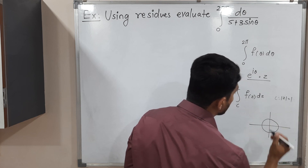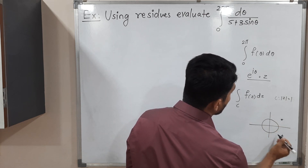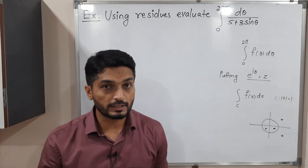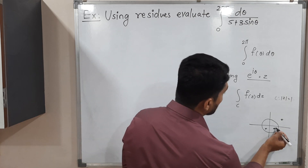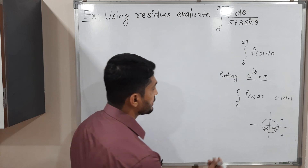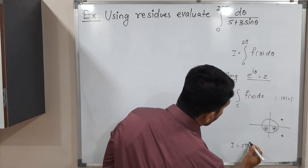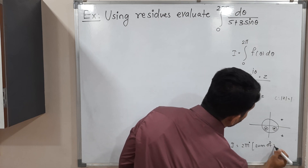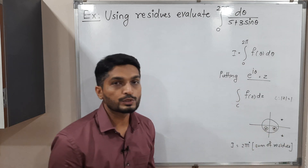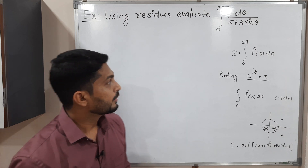We then find the singular points of the resulting complex function — points where the function is not analytic. Some will lie outside the circle, some inside. We identify those lying inside, find their residues, and the value of the integral is 2πi times the sum of those residues.